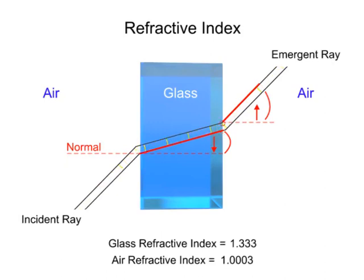With the top portion still at the speed determined by the medium, this causes the beam to pivot away from the normal line.